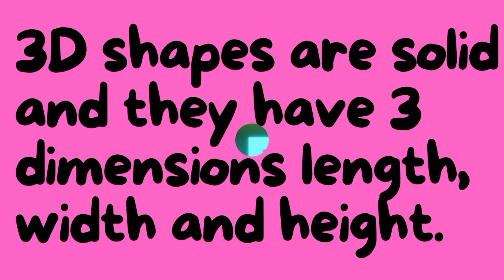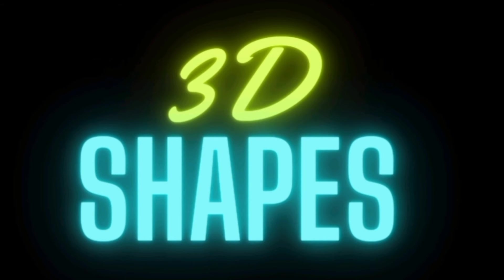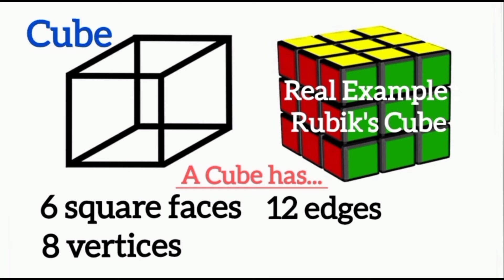Cube: a cube has six square faces, 12 edges, and eight vertices. A real example of a cube is a Rubik's cube.